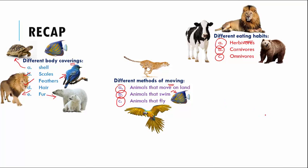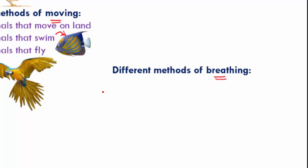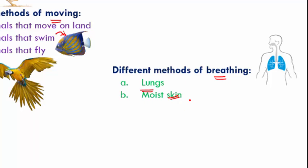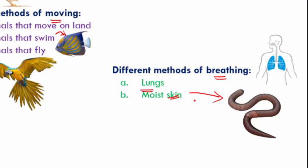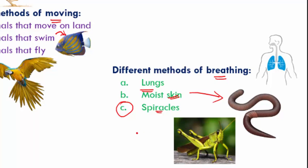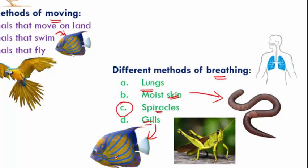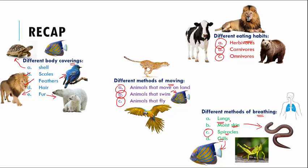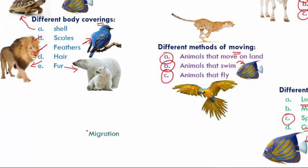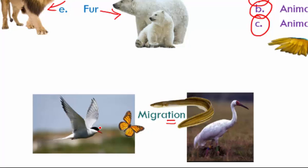Then we covered different breathing methods: lungs (humans), moist skin (earthworm), spiracles — holes in the body (insects), and gills for breathing underwater (fish). Finally, we covered migration with examples: the Arctic tern, the monarch butterfly, the freshwater eel, and the Siberian crane.